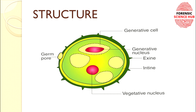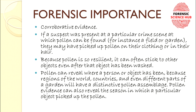The exine is made up of a very resistant material known as sporopollenin. This sporopollenin protects it from all kinds of chemicals, making it very difficult for pollen grains to get destroyed in any way. If we talk about forensic importance, pollen grain acts as a corroborative evidence.